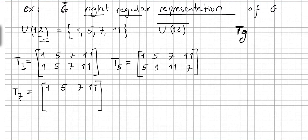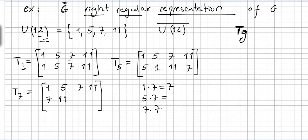Now for the transformation through 7. 1 times 7 equals 7. 5 times 7 equals 35, modulo 12 that is 11. 7 times 7 equals 49, modulo 12 that is 1. And 11 times 7 equals 77, modulo 12 that is 5.